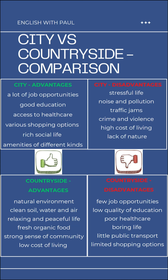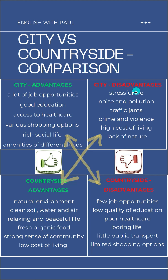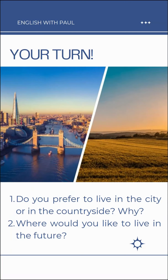Look at the summary comparison of the advantages and disadvantages of both worlds. Here is a simple trick that will make it easier to remember all the categories and arguments — remember them as the opposites. A lot of job opportunities versus few job opportunities. Good education versus low quality education. Access to healthcare versus poor healthcare. Stressful life versus relaxing life. Noise and pollution versus natural environment. High cost of living versus low cost of living.